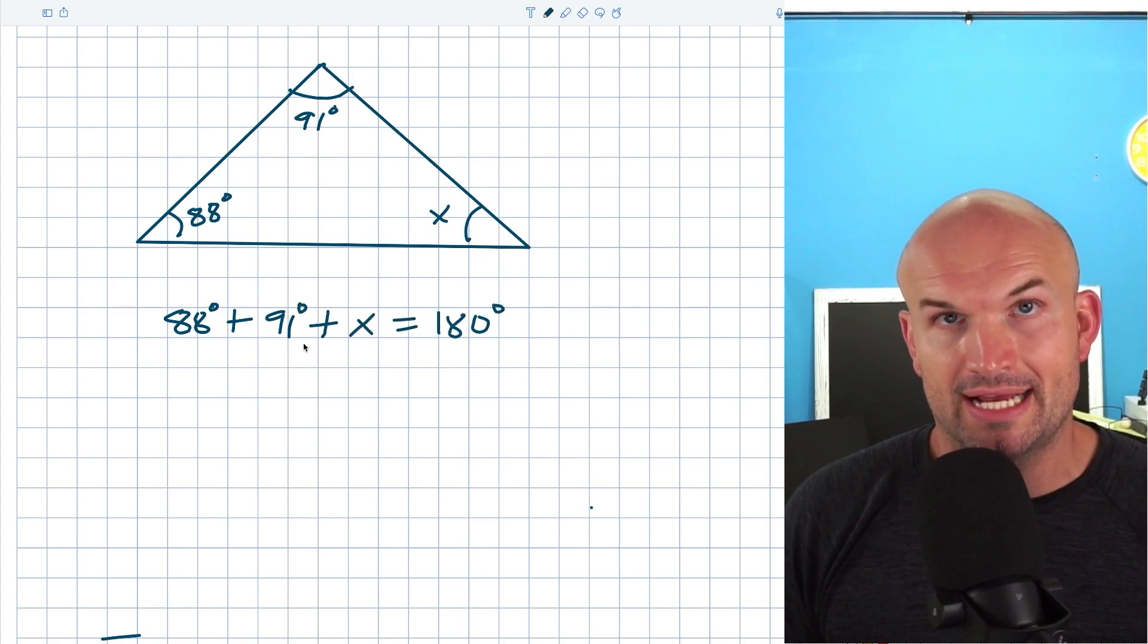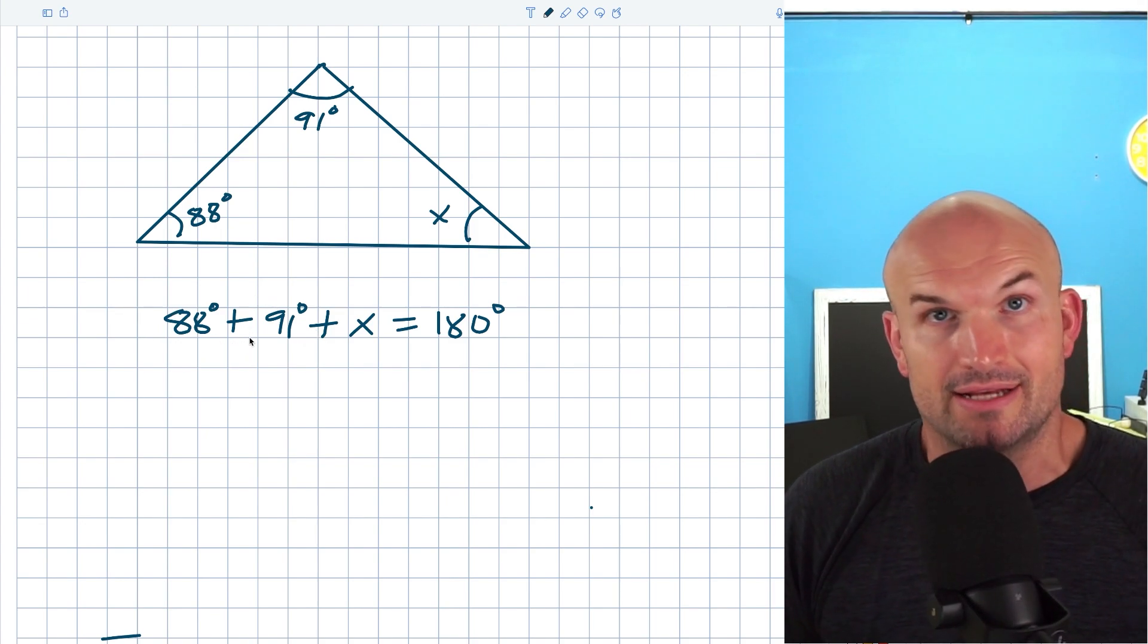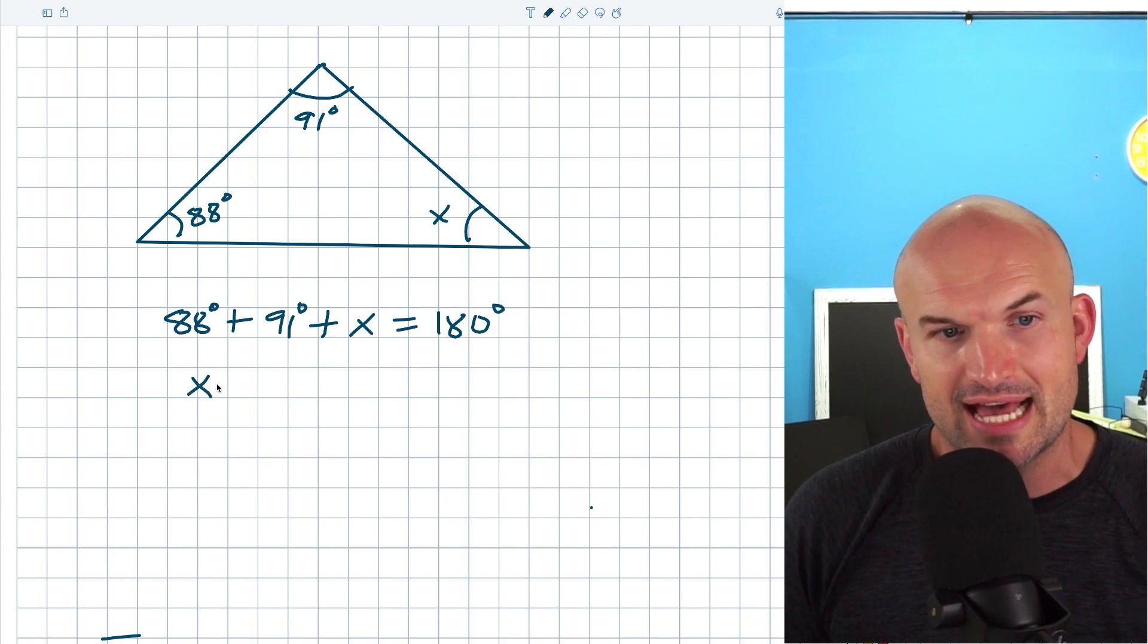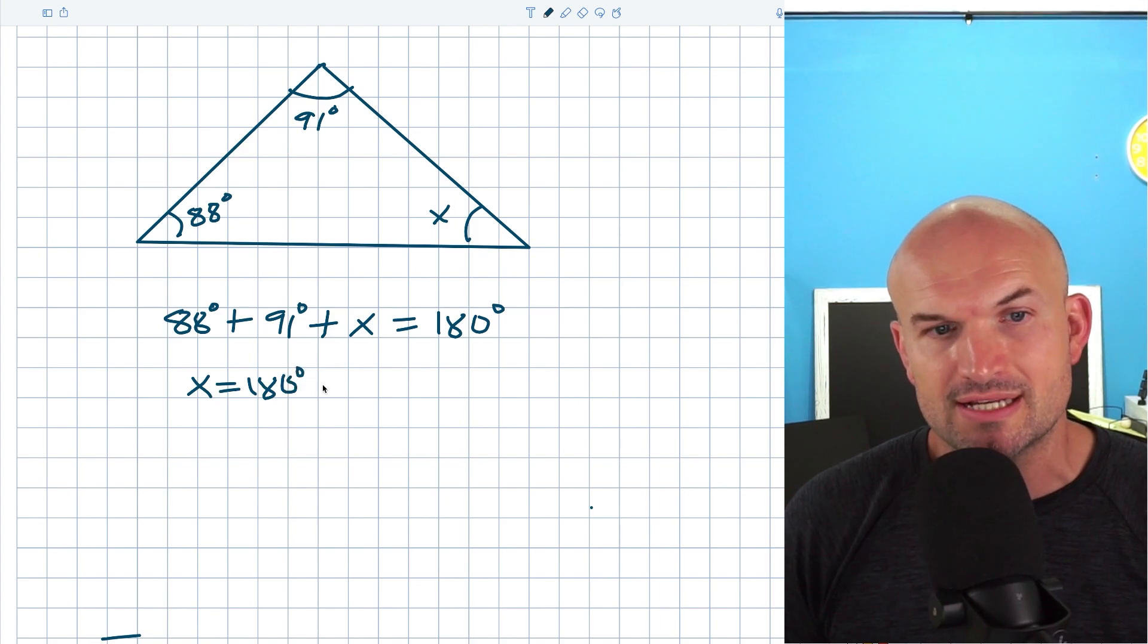How do we solve this? We could combine these, or a lot of times once you get some experience on doing problems like this, especially maybe at the end of the year or in a different class, when you've done this over and over again, we can actually just jump exactly to this: X is equal to 180 degrees minus 91 degrees minus 88 degrees.